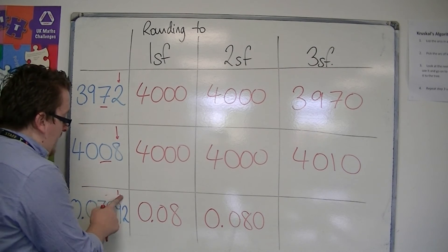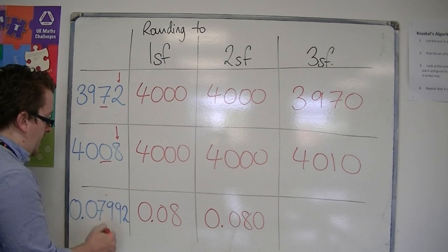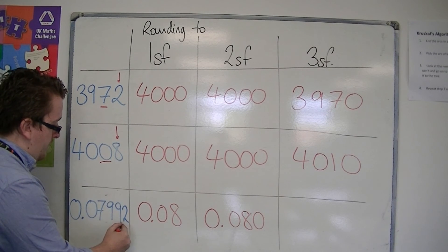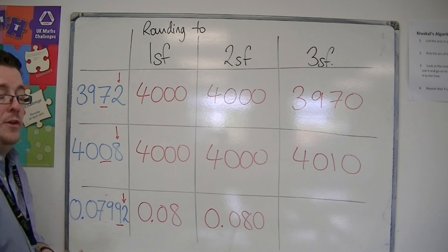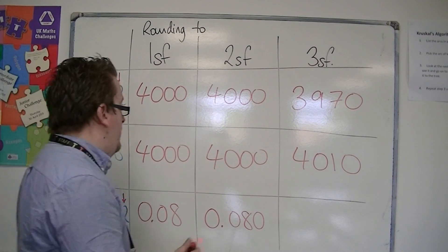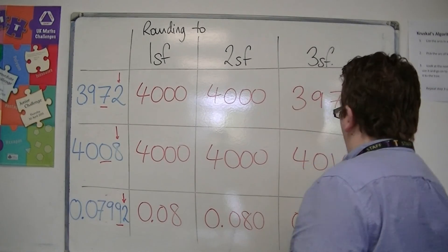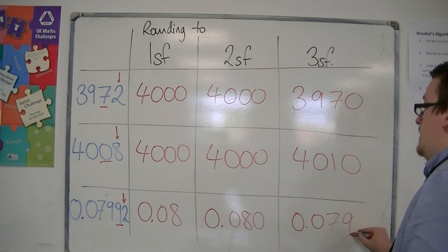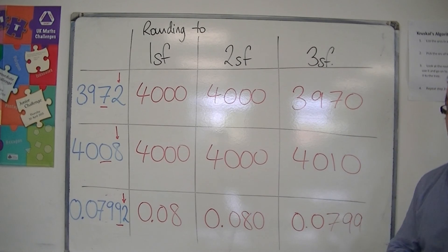And finally, to three significant figures, 1, 2, 3, 1 to the right is 2, so I round down. So this would be 0.0799 to three significant figures. So this is how we round to significant figures,